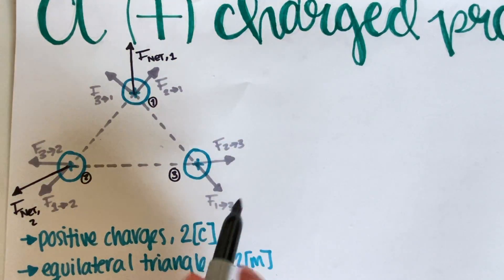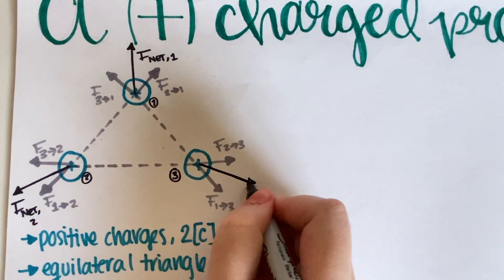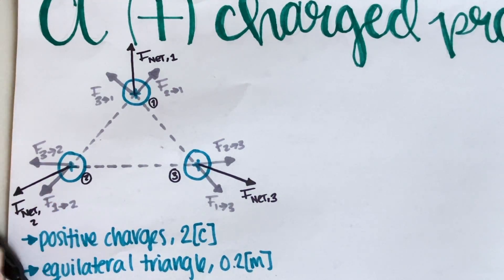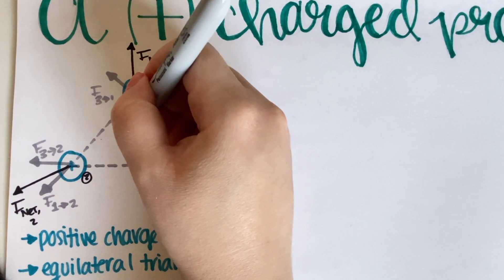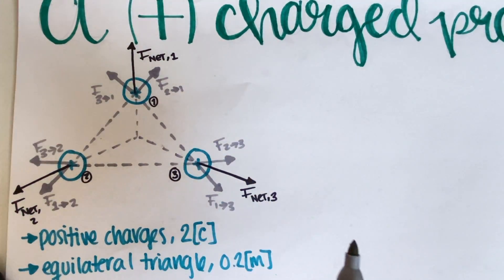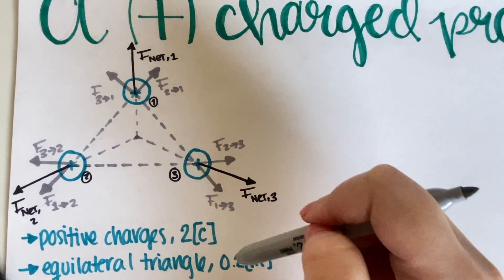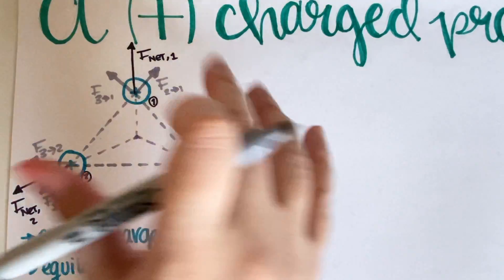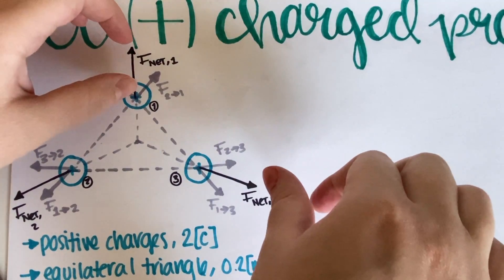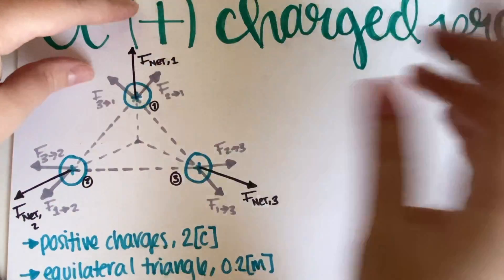For charges 2 and 3, the same vector addition applies. Visually adding the arrows for charge 2 gives a net force pointing outward in that direction, and similarly for charge 3. In a perfect equilateral triangle, all three net forces should point away from the center — which confirms the drawing is correct. This is the final answer for Part A: draw the net force arrows pointing outward from each charge.